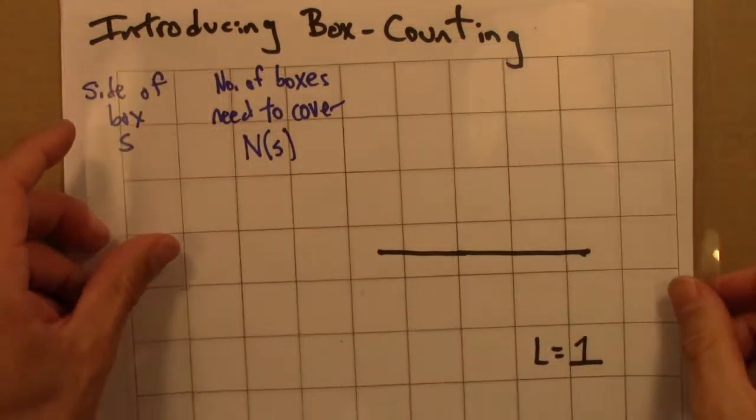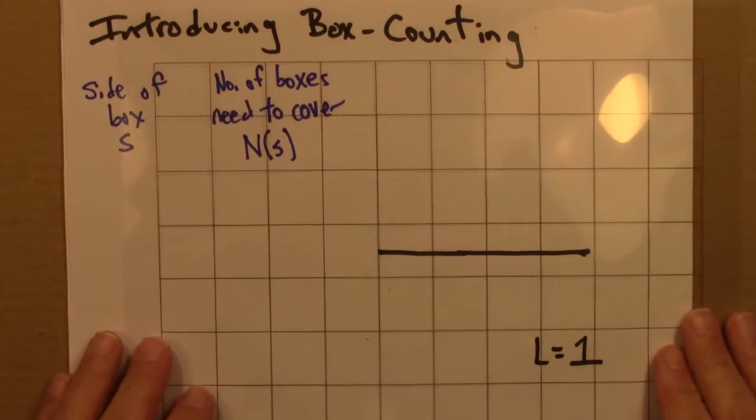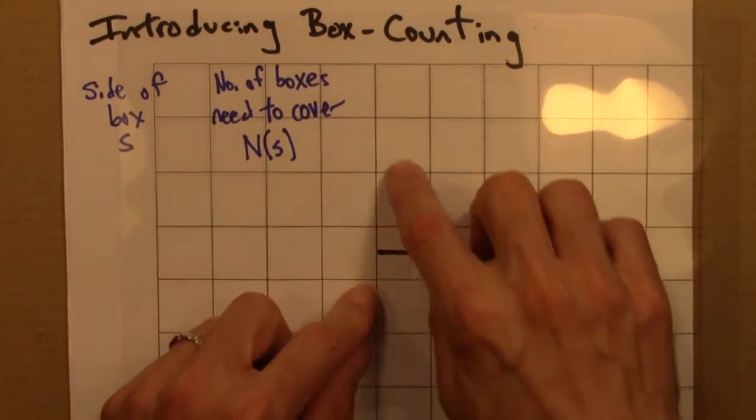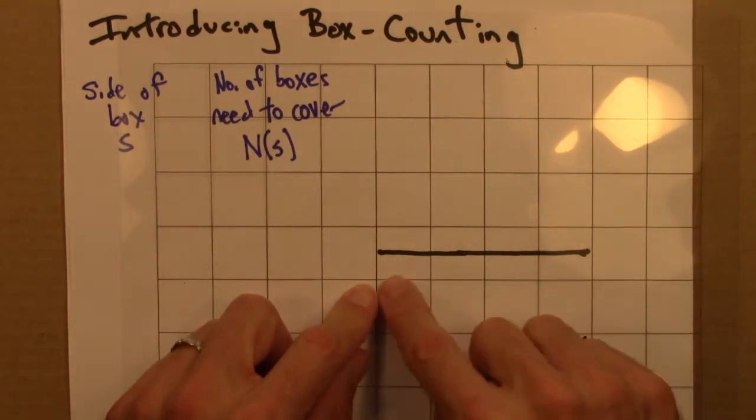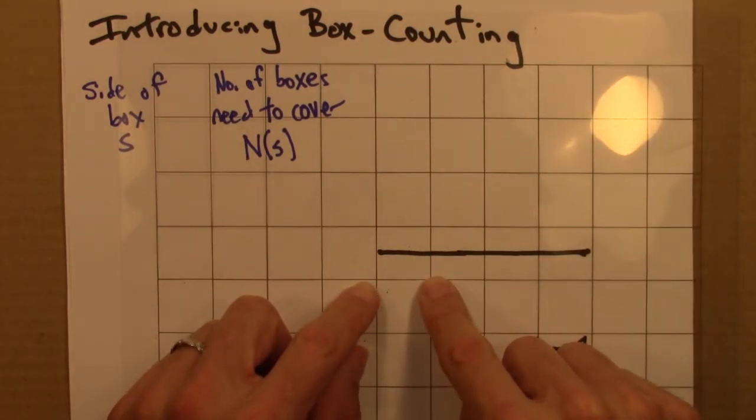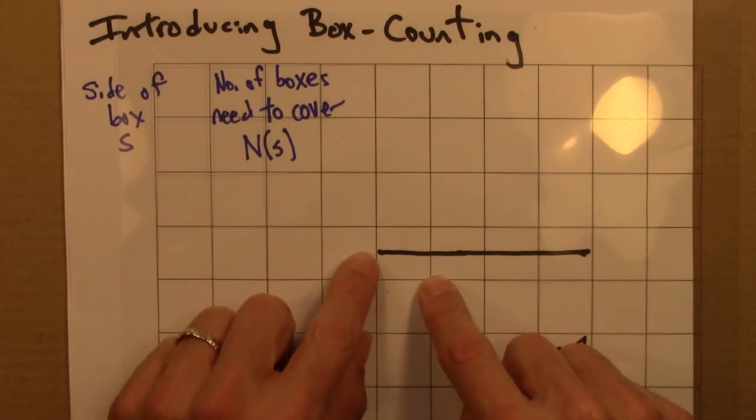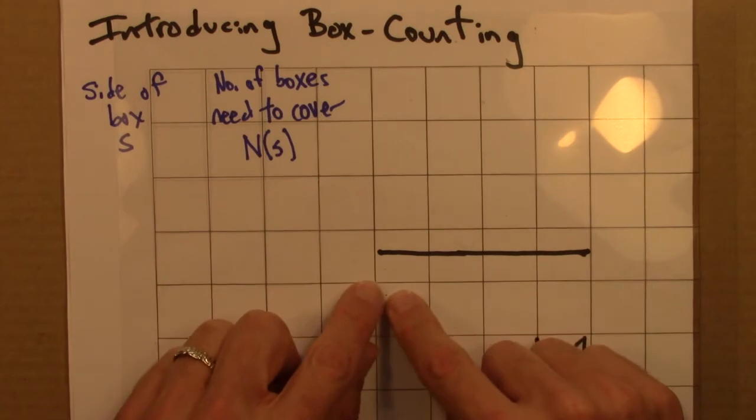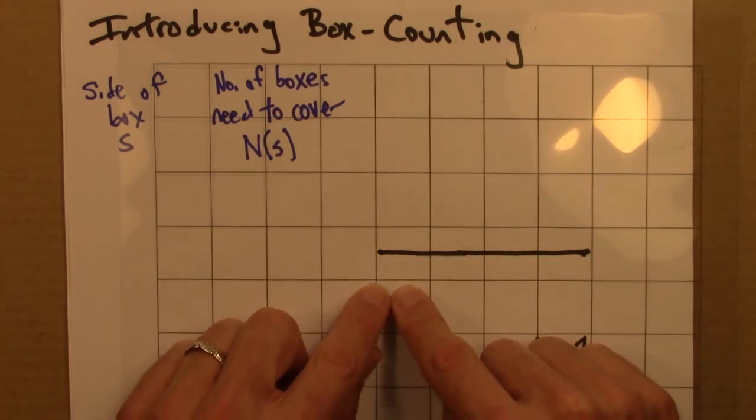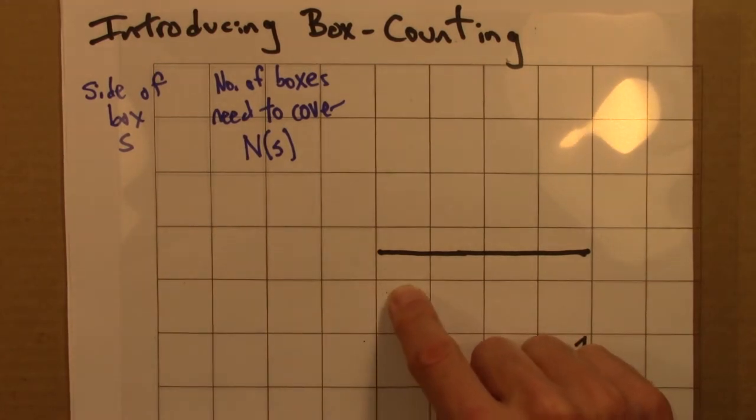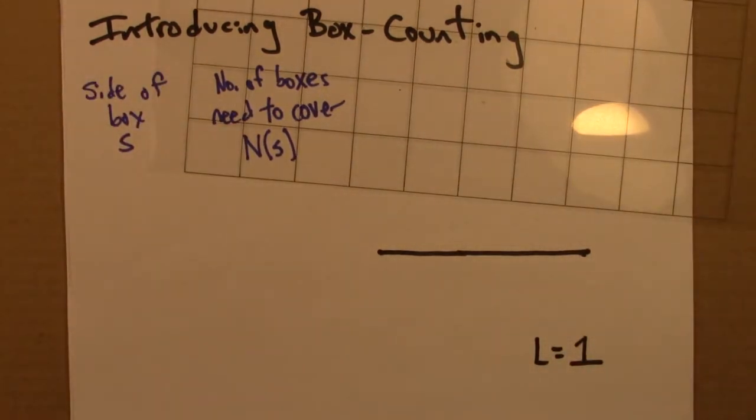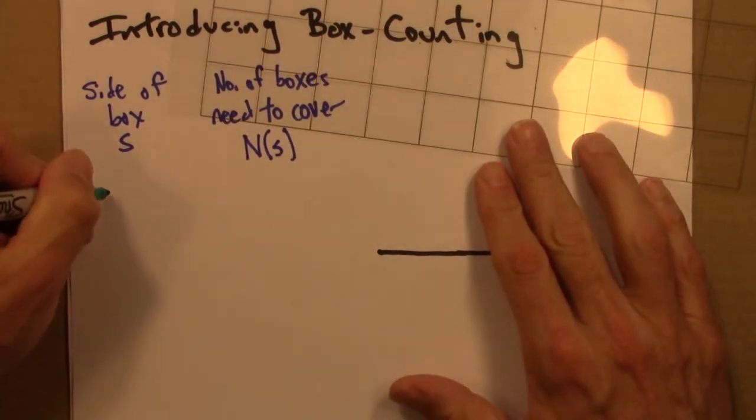So here is a grid, so I can lay a bunch of boxes on top of this line. And these boxes have a length that the side of each box is a quarter. Why do I say that? Well, because this length is 1, and they're 1, 2, 3, 4. So I made these boxes so that the side is a quarter. So for the first part of this experiment, the side is going to be a quarter.